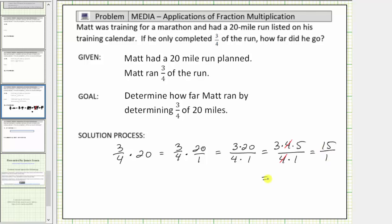And fifteen over one, or fifteen divided by one, is equal to fifteen. So now we know Matt ran fifteen miles when he ran three-fourths of twenty miles.